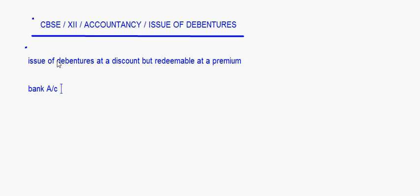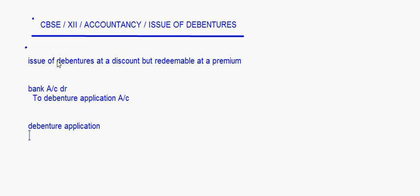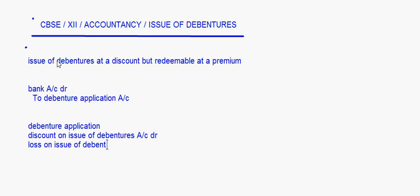Bank account debit to debenture application account. Now the next entry will be debenture application account — this is the amount of money that you received on application. Now whatever is the discount on issue of debentures, that will also be debited, and whatever is the premium on redemption — that is the loss on issue of debentures — that is also debited to the debentures account.